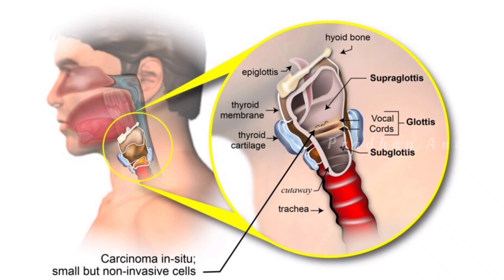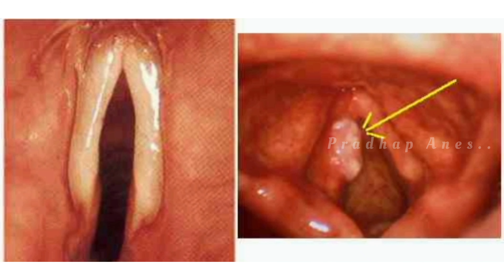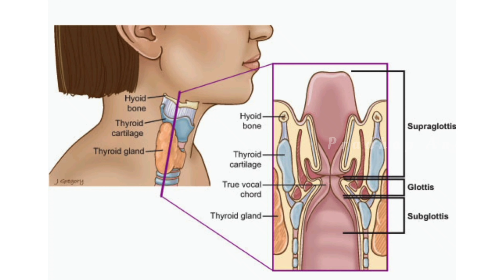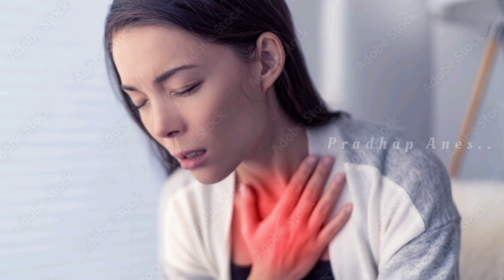Glottic cancer is a malignancy of the larynx that involves the true vocal cords and anterior and posterior commissures. Because of its anatomical location, it can have profound effects on the basic vital functions including breathing, swallowing, and voice.